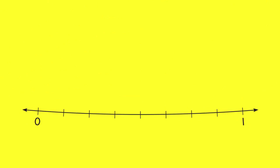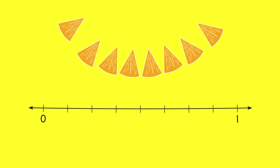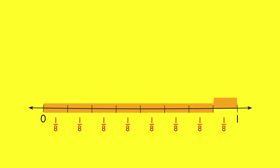You can show a unit fraction on a number line. This number line shows one whole. It is divided into eight equal parts. Each part shows one-eighth of the whole.